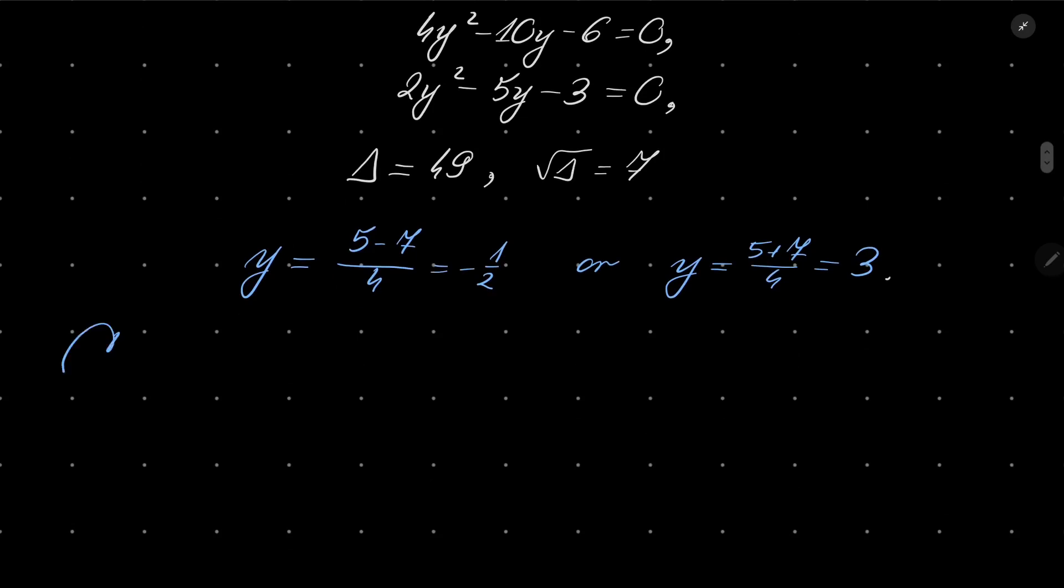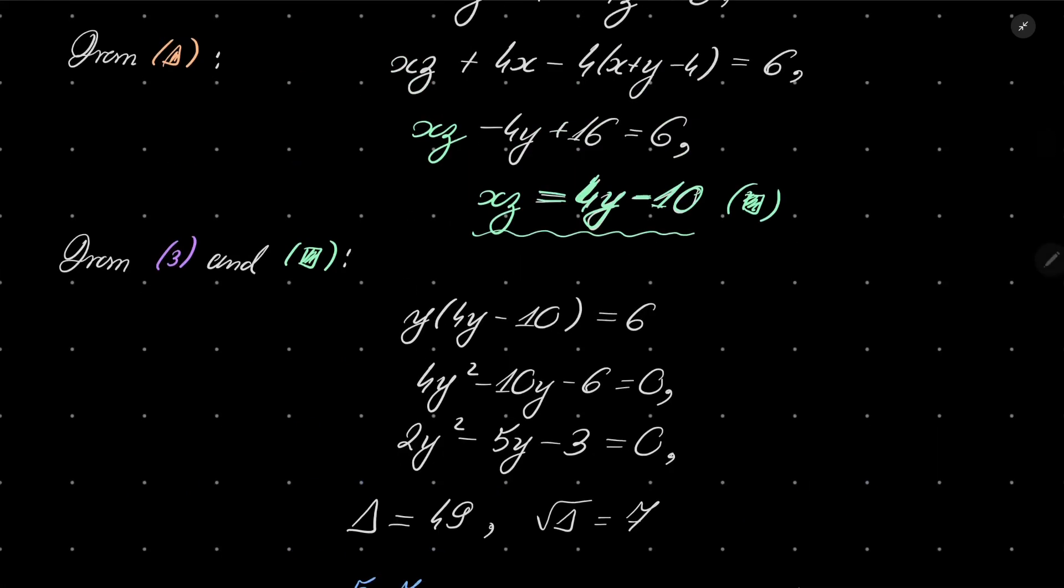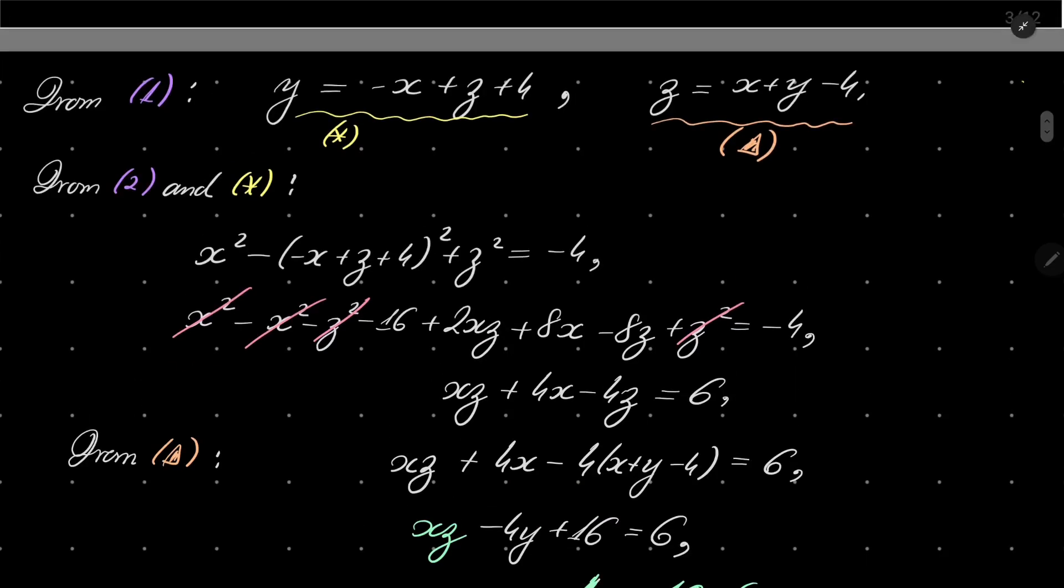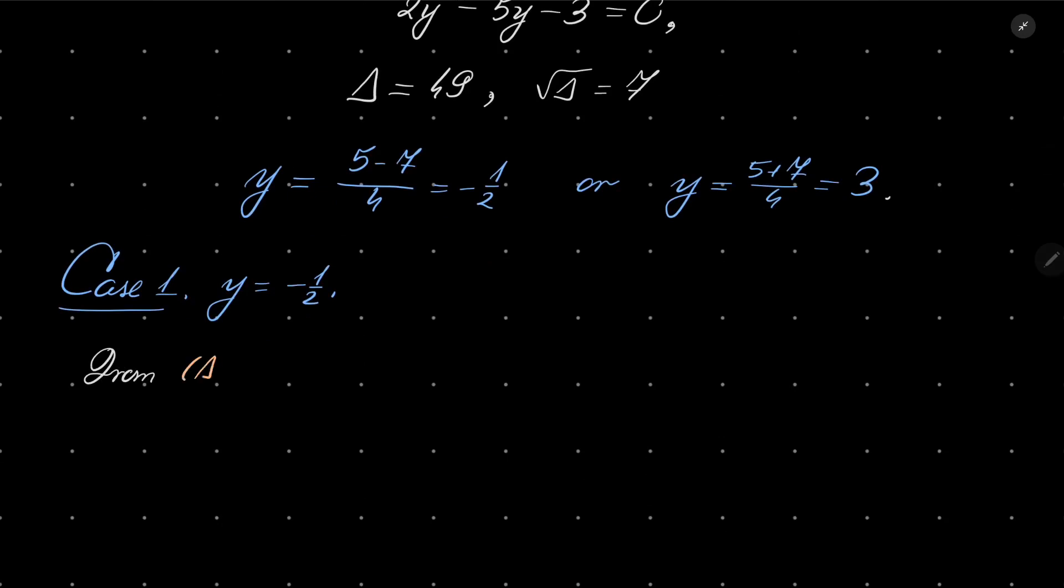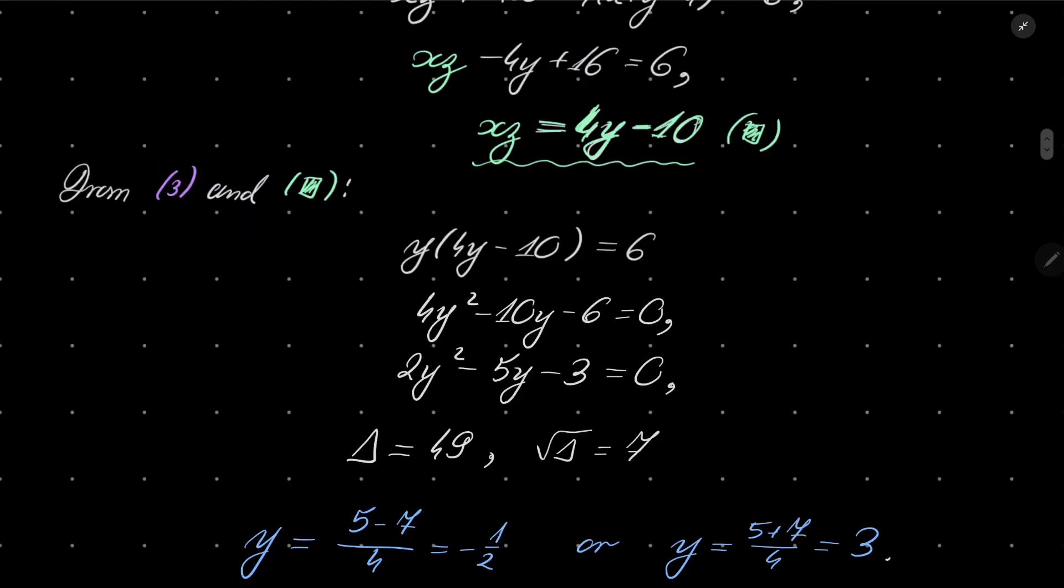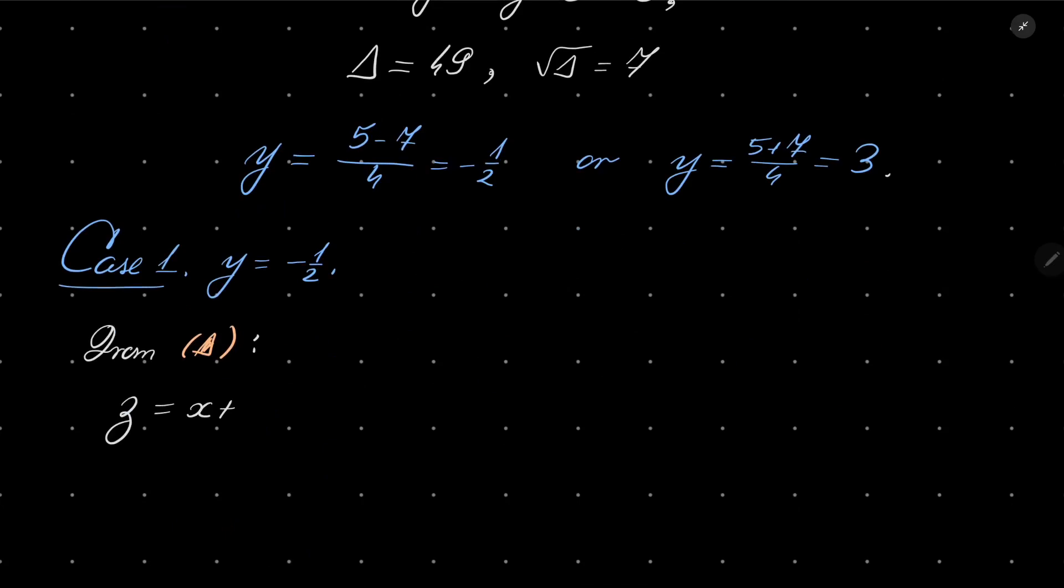Let's check both cases separately. Case number 1: y equals minus 1 half. We wish to find x and z using the conditions marked square and triangle. From condition triangle, z equals x plus y minus 4, so with y equals minus 1 half, z equals x minus 9 over 2.